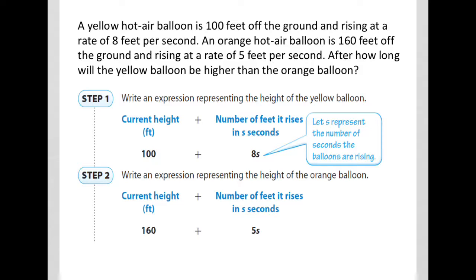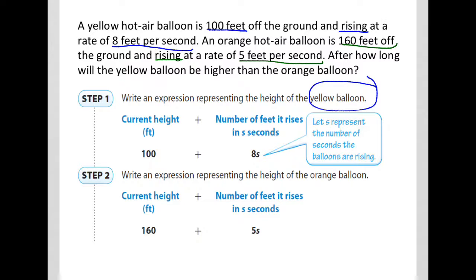First, we write the expression for the yellow balloon: starting at 100 feet and rising 8 feet per second, letting s represent seconds, that gives us 100 plus 8s. For the orange balloon, starting at 160 feet and rising 5 feet per second, the expression is 160 plus 5s. Now we need to take these two expressions and create an inequality.